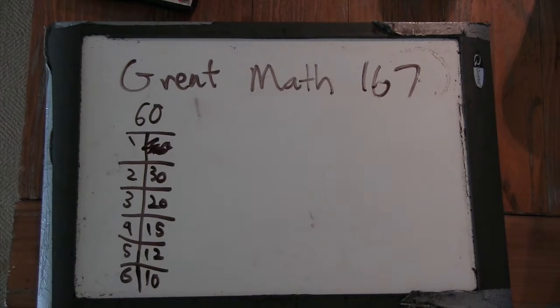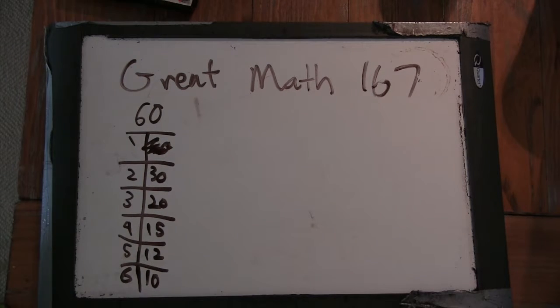These are proper divisors. So it would be 1, 2, 3, 4, 5, 6, 10, 12, 15, 20, and 30.